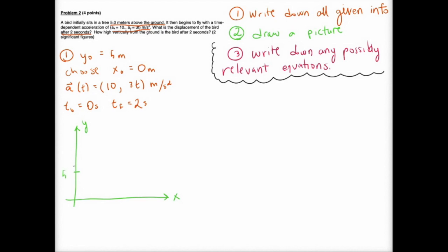The second thing I always do when doing physics problems is to draw a picture. In this case we have an x-y axis, and we know that our initial position of the bird is going to be (0, 5) — x equals 0, y equals 5. That is its initial position and that's all we're given for right now, so there's nothing else we need to draw on our coordinate system as of right now, but we will a little bit later.